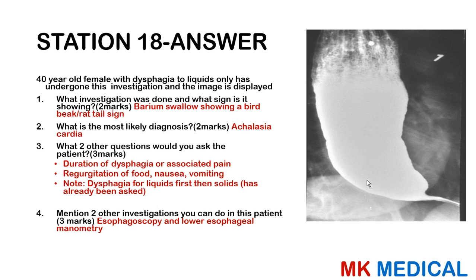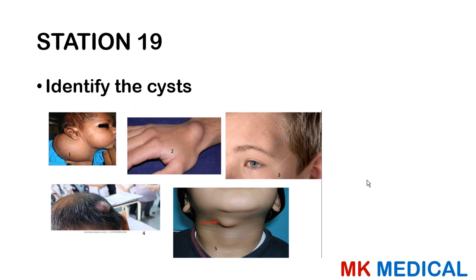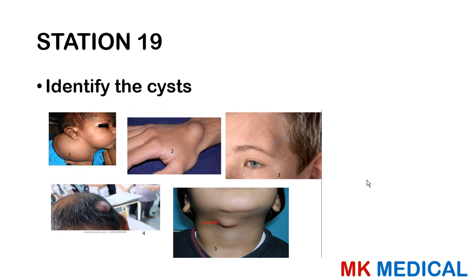Station 19 consists of cysts to identify. Station 1 is a cystic hygroma; Station 2 is a ganglion cyst; Station 3 is a dermoid cyst; Station 4 is a sebaceous cyst; Station 5 is a thyroglossal cyst. Key locations: dermoid cysts at the corner of the eyes, ganglion cysts at the back of the hands, cystic hygromas in the neck in children, thyroglossal cysts as midline neck masses in children, and sebaceous cysts on the scalp.